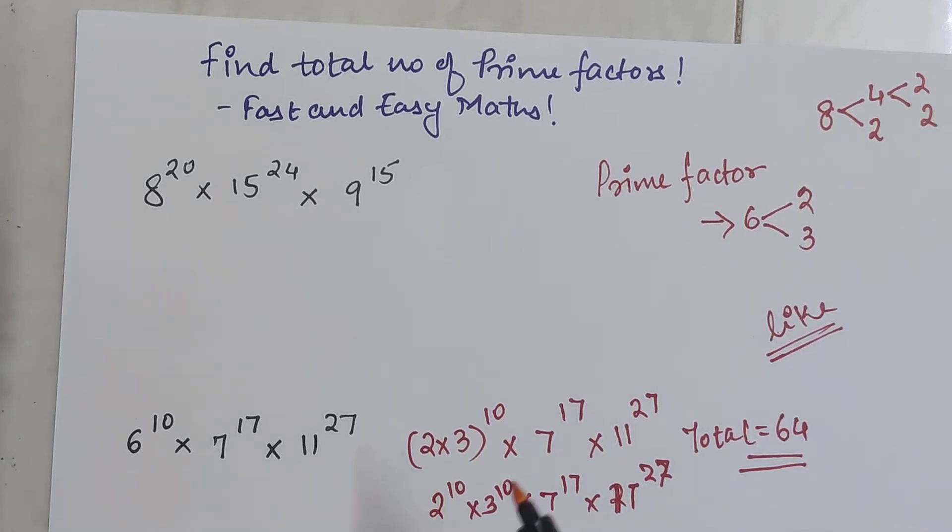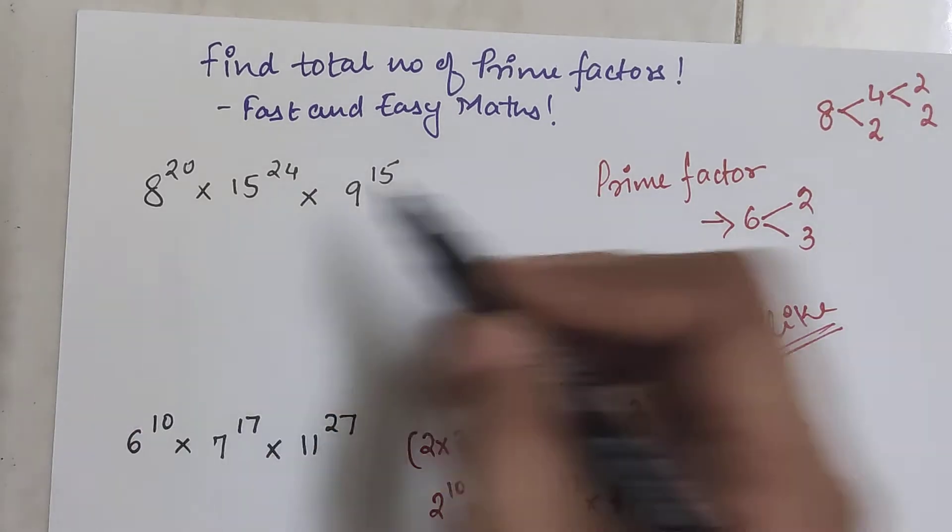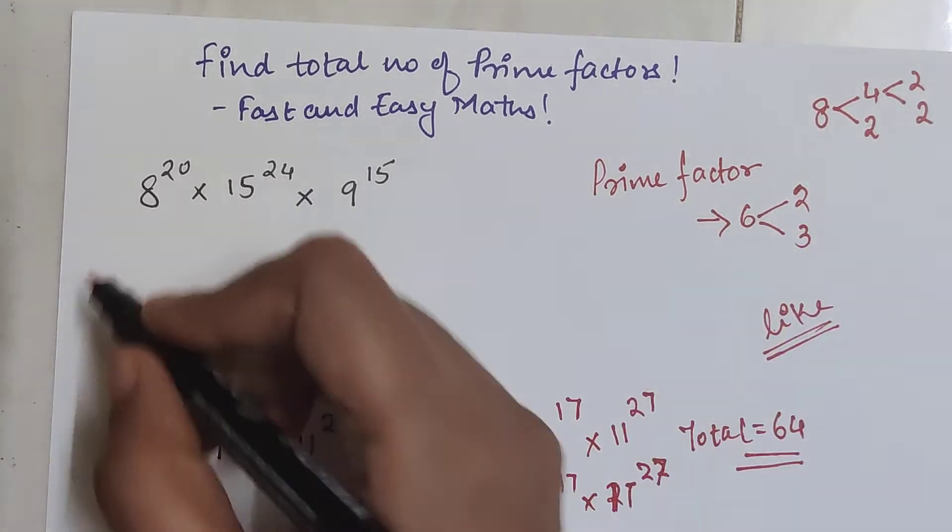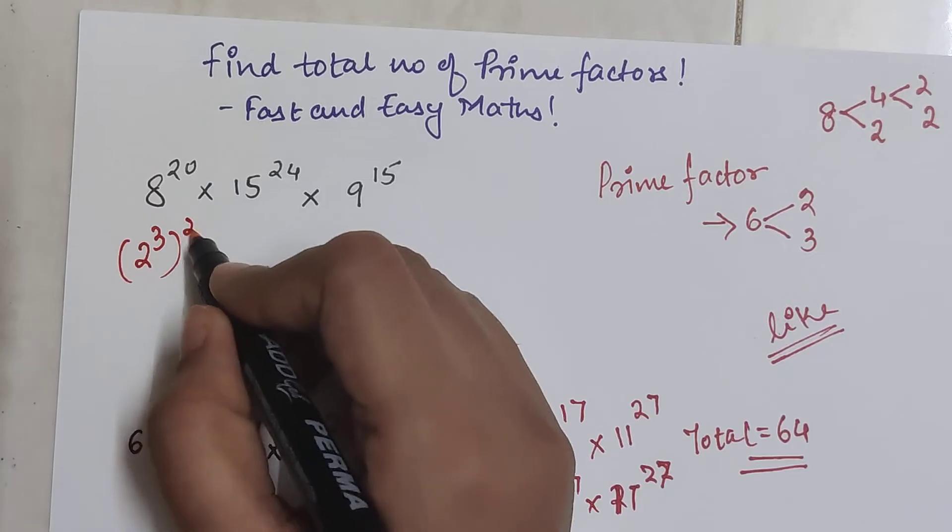Please do not make the mistake of representing 8 as 4 into 2. I will tell you why. Because this becomes now 2 into 2 into 2, that becomes 2 cube the whole raised to 20.